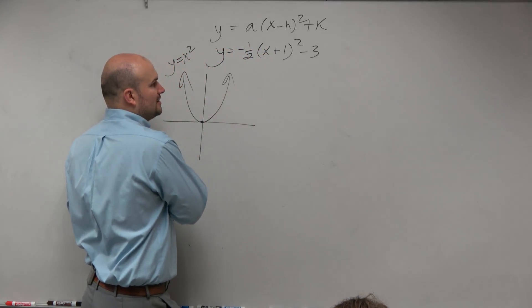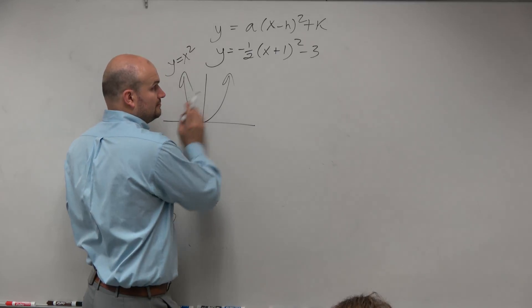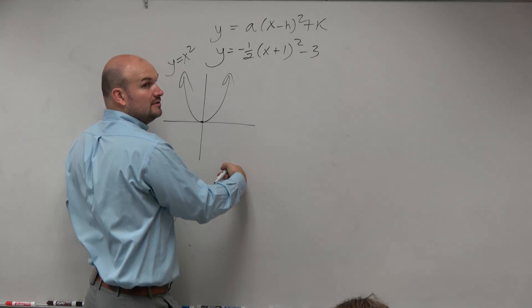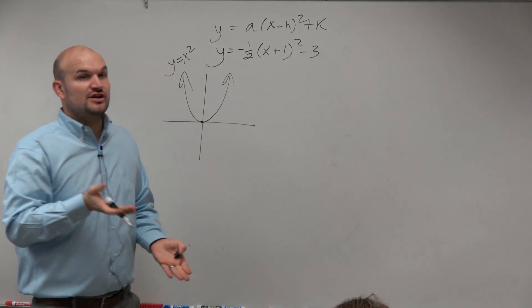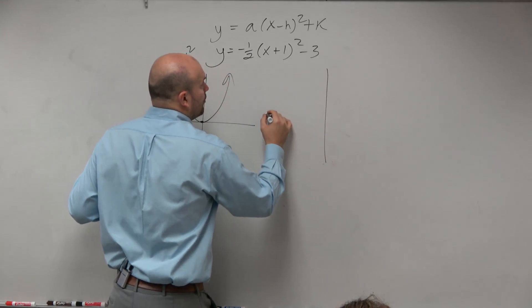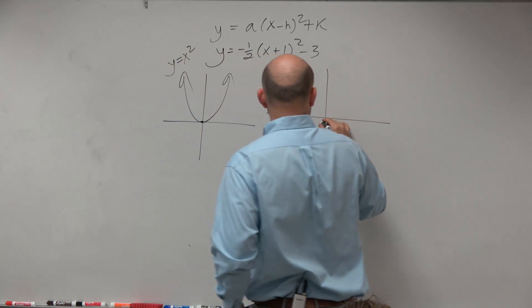So we kind of look at this, and what we notice is there's a couple things that are going on. We know this negative is actually reflecting the graph down. We know this 1 half is actually a vertical compression. The graph is being shifted one unit to the left and three units down.